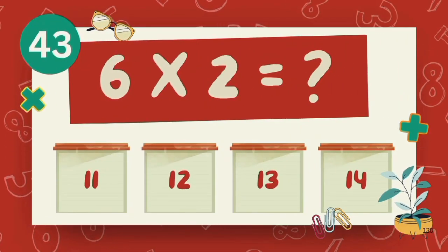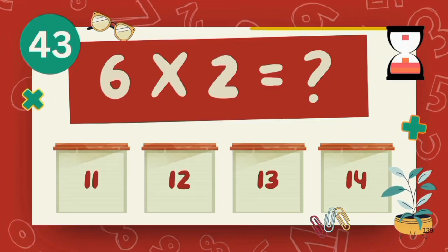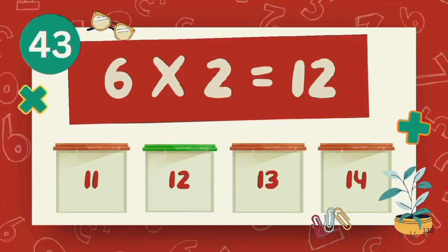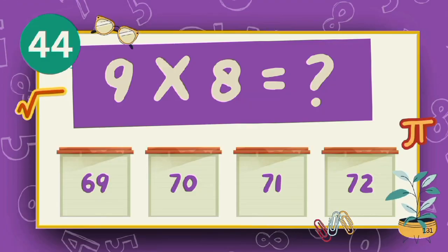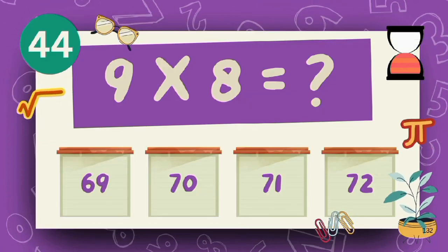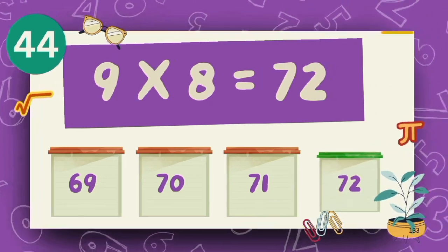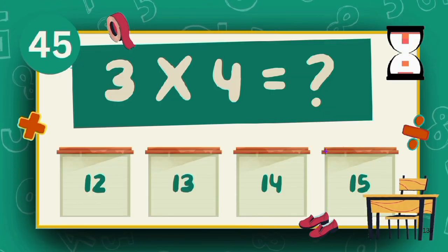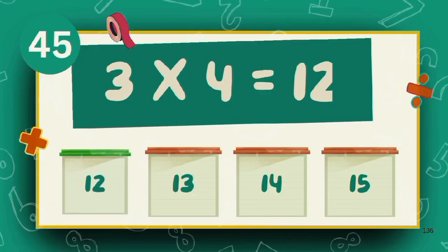What is 6 multiply 2? The answer is 12. What is 9 multiply 8? The answer is 72. What is 3 multiply 4? The answer is 12.